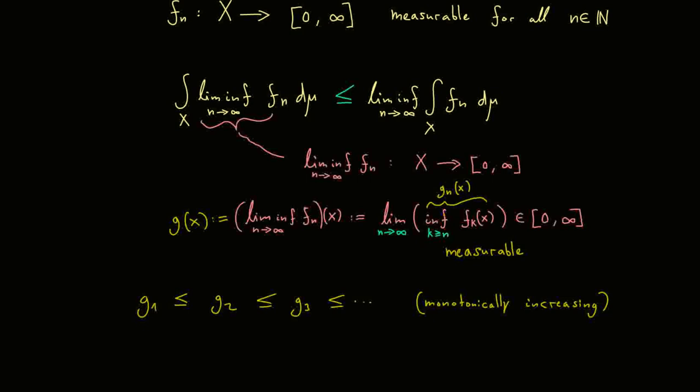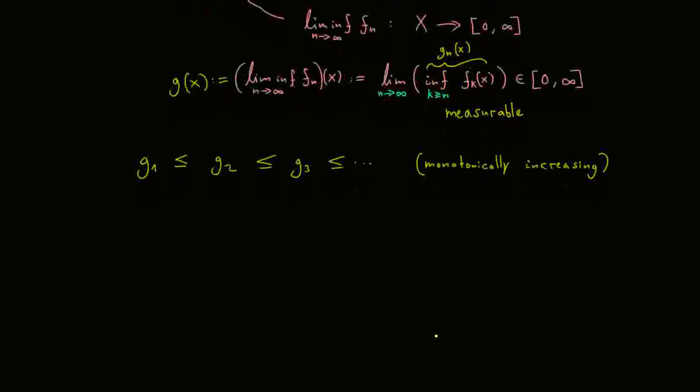So g1 is less or equal than g2, less or equal than g3, and so on. This follows immediately from the definition of the infimum. Because if we shift the cut point n to the right, the infimum can only get bigger, not smaller. So we get out a sequence that is monotonically increasing. And of course, this would be very helpful for our proof now, because we can use our convergence theorem we already know. And of course you know, it's the monotone convergence theorem. And indeed with this, the proof is not so long.